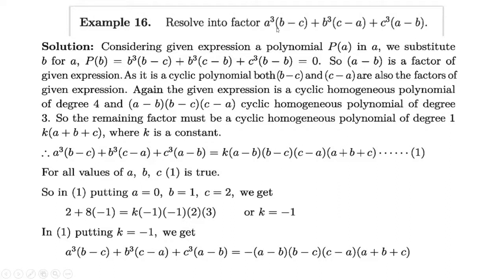The degree of this polynomial is 4, but we have found 3 factors: (a − b), (b − c), and (c − a). So the remaining factor must be a cyclic polynomial of degree 1, which is (a + b + c). Putting in suitable values of a, b, c gives the value of k. This gives us the complete factorization of this expression.